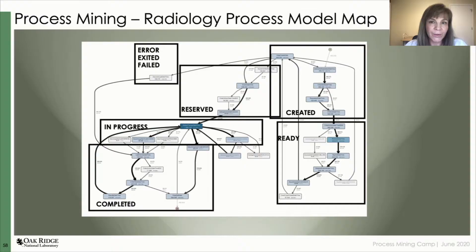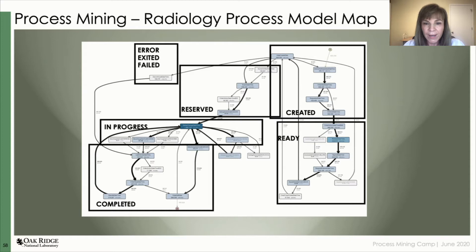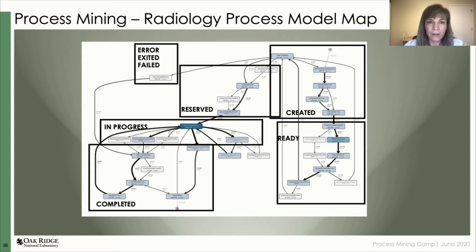This slide presents the updated radiology process model map with frequencies. It includes blocks for each of the state transitions with unique names for each activity, so there is no confusion with the 'complete' status appearing in different contexts. On the upper right side we see the series of activities in the created state; on the lower right side the cluster of activities in the ready state; in the upper center the cluster during the reserved state; followed by the in-progress cluster and then the complete cluster. On the upper left we see the error, exceeded, and failed activities associated with the different types of cases that have the discontinued event.